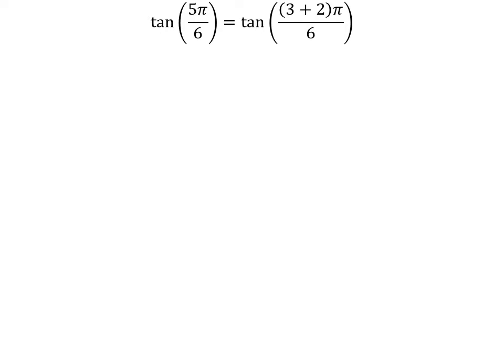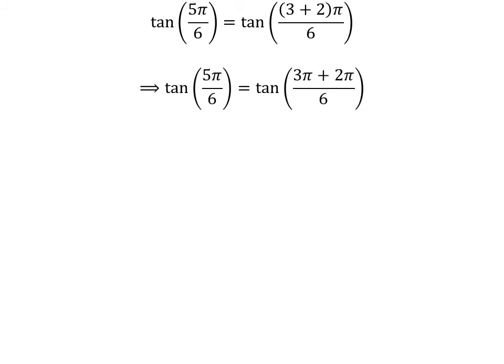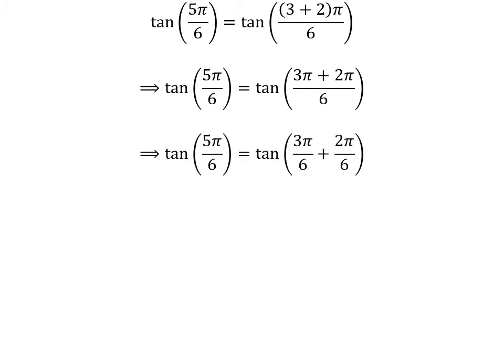Let us look into the second method. We know 3 plus 2 is equal to 5, so tangent of 5 times pi upon 6 is equal to tangent of 3 plus 2 times pi upon 6. Expanding the numerator, we get tangent of 3 times pi plus 2 times pi upon 6. The fraction 5 times pi upon 6 can be expressed as the sum of two fractions: 3 times pi upon 6 and 2 times pi upon 6. Cancelling out common factors gives us tangent of 5 times pi upon 6 is equal to tangent of half of pi plus pi upon 3.